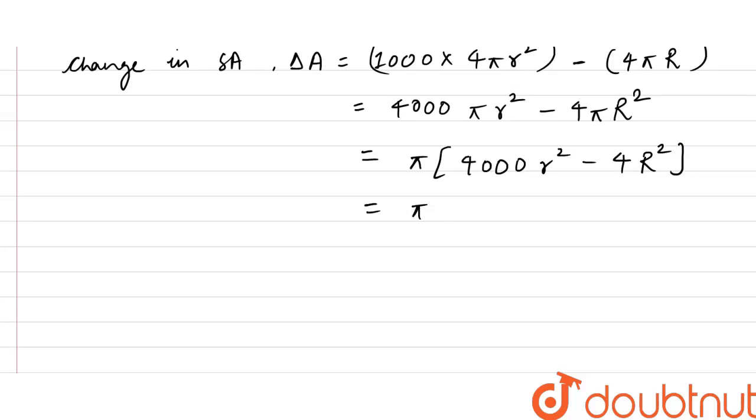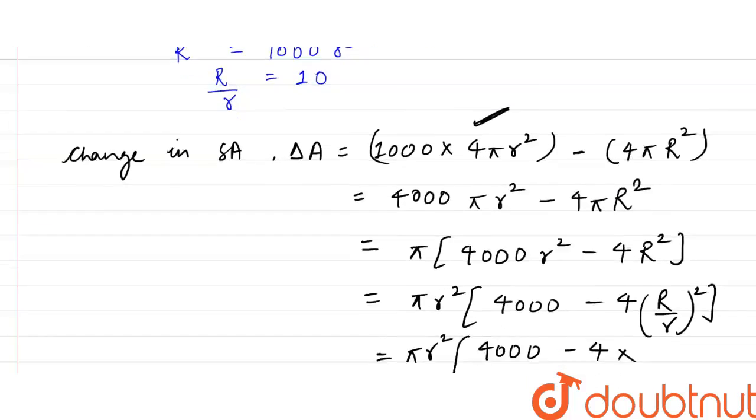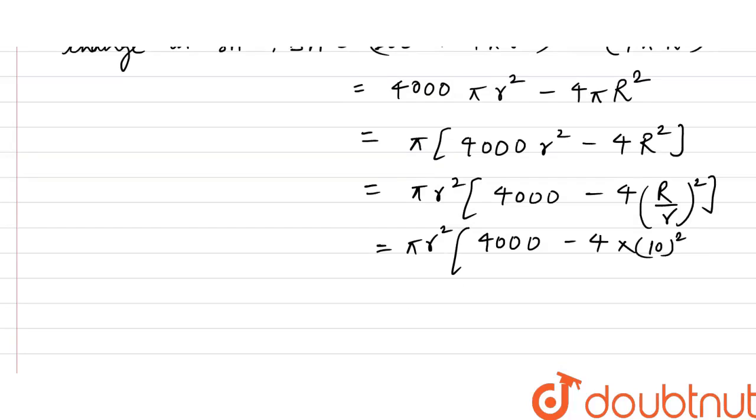We can multiply and divide by small r square so we get pi r square into 4000 minus 4 capital R upon small r square. This is equal to pi r square times 4000 minus 4 into capital R upon small r is equal to 10, so 10 square. This comes out to be 4000 minus 400 which is 3600 pi small r square.